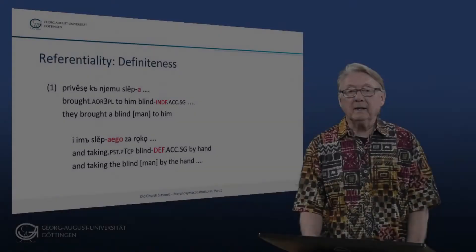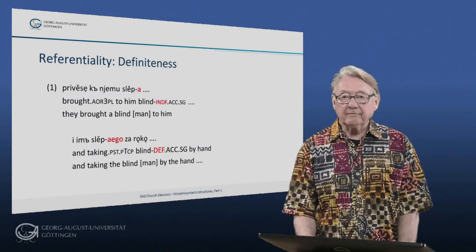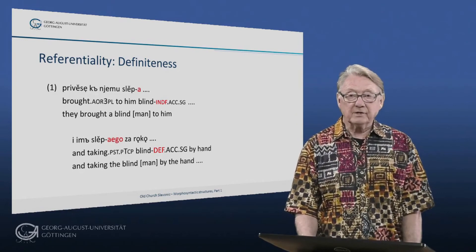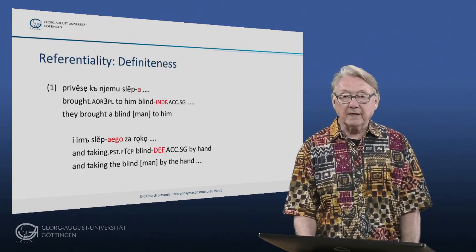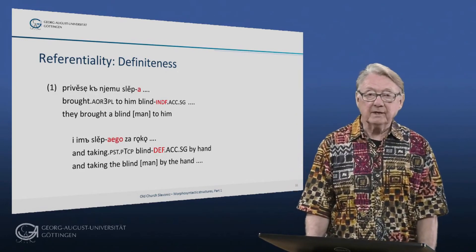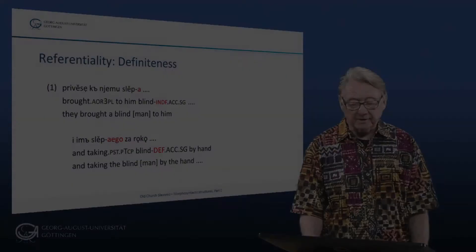In OCS, there are no definite or indefinite articles, but adjectives have two declensions, one definite, the other indefinite.